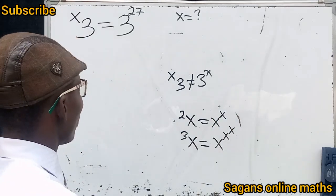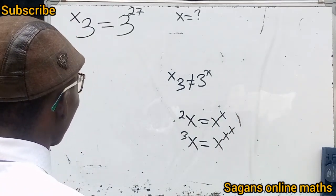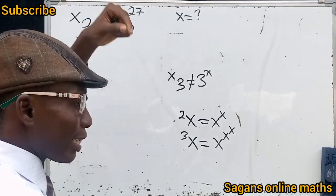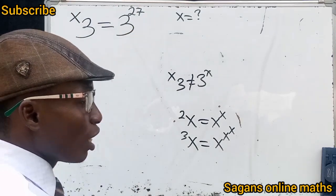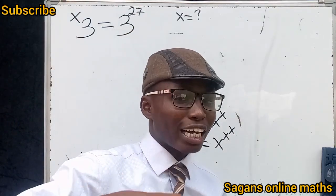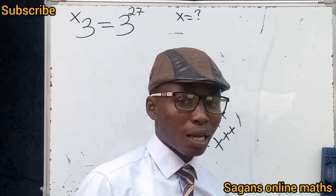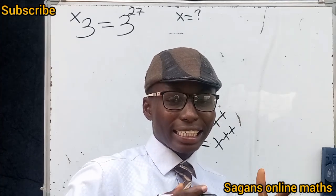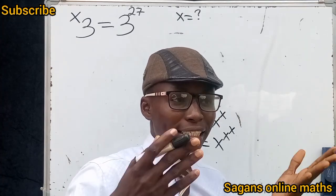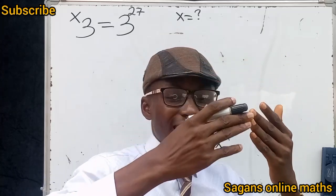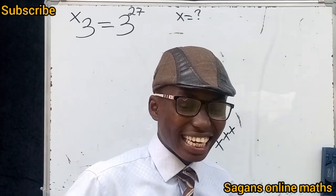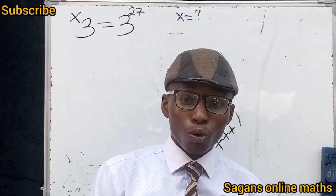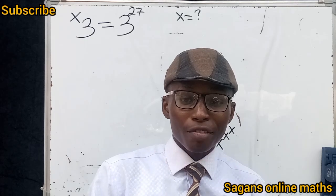Now let's consider this question on the board. To solve this problem, I have to convert 3 to the power of 27 into tetration form. If you cannot convert it to tetration form, you cannot solve this problem. Most students, when they see questions like this, say since the bases are the same they equate the index — but that is not the index, that is tetration.